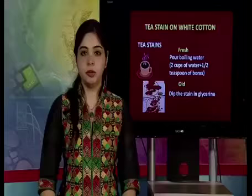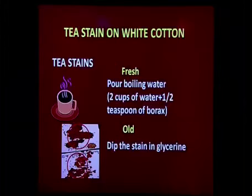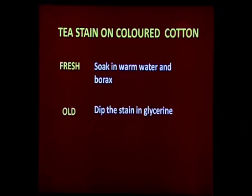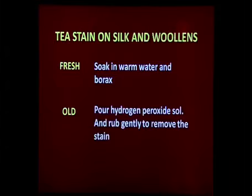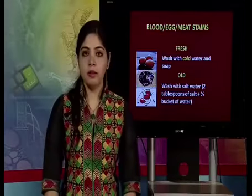To remove tea stains from fresh fabric, pour boiling water with a teaspoon of borax into it. For old stains, dip the stain in glycerin. For colored cotton, soak in warm water and borax; for old stains, dip in glycerin. For woolen or silk, remove fresh tea stains by soaking in warm water and borax; for old stains use hydrogen peroxide solution and rub gently. For synthetic fabrics like nylon, polyester, and acrylic, soak fresh stains in warm water with borax; for old stains, dip in warm water with a few drops of sodium perborate until the stain is removed.